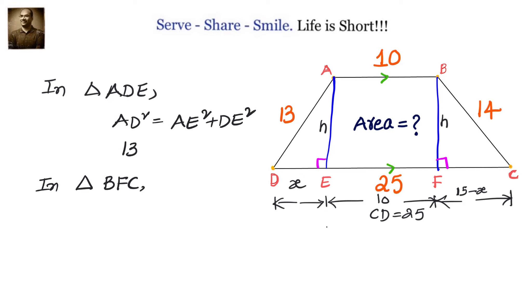Similarly, let's go to the other right angle triangle BFC. There we have again Pythagorean theorem, so we can say BC² = BF² + CF². Now we know that BF is h and FC is 15 minus x, so we'll write down 14² = h² + (15 - x)².